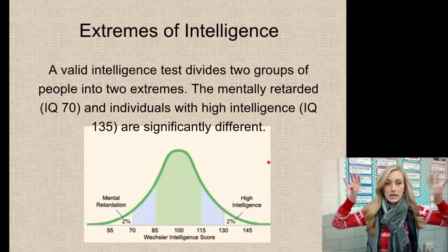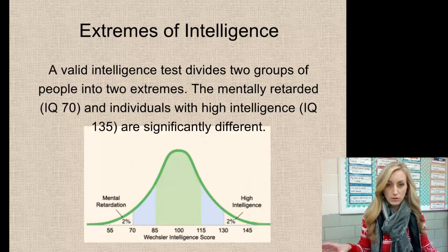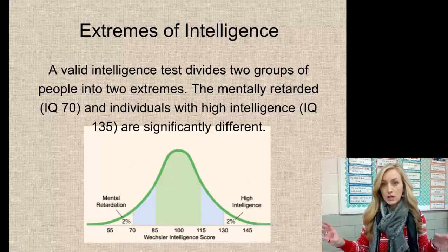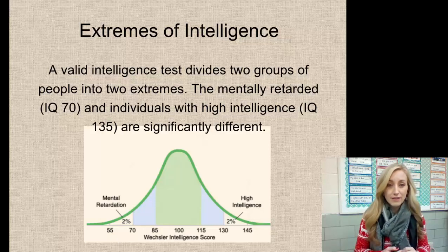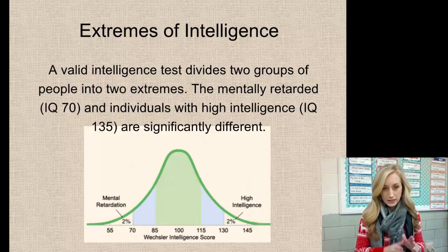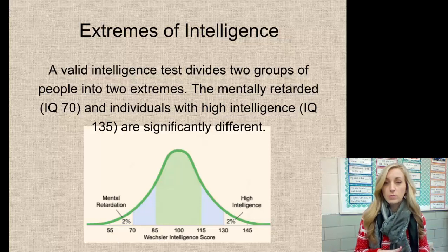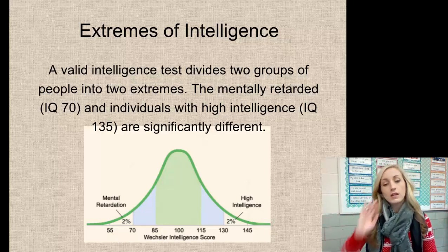The extremes are at either end of the normal curve. A valid intelligence test divides people into two extremes — either extremely high or extremely low. The intellectually disabled — cross out 'mentally retarded' — is now the correct term, defined as an IQ of 70 or lower. Individuals with high intelligence would have an IQ of 135 or higher. These are obviously very different extremes.